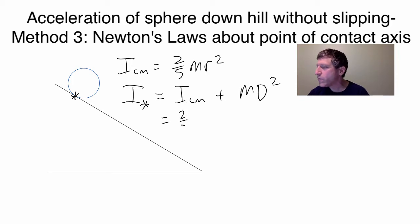So this will be 2/5 MR squared plus M times the distance between the center of mass axis, which is right there, and the new rotational axis, which is just that distance from there to there is just R. R squared...